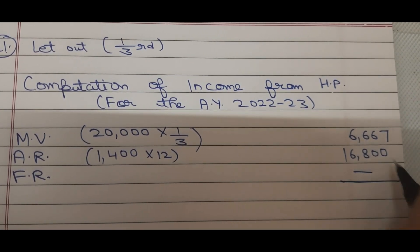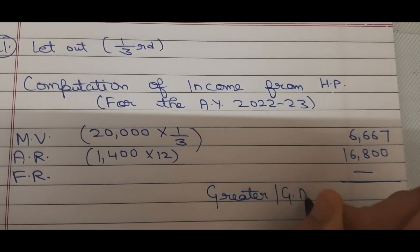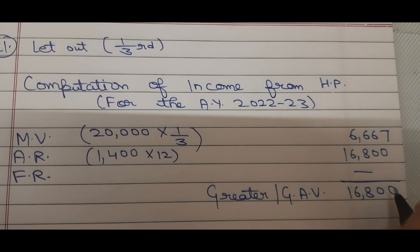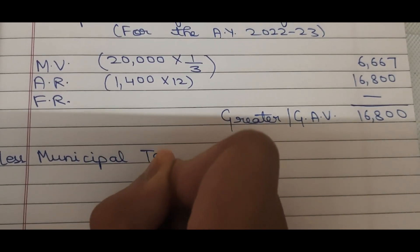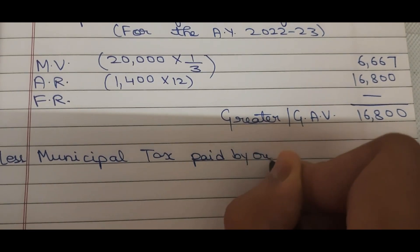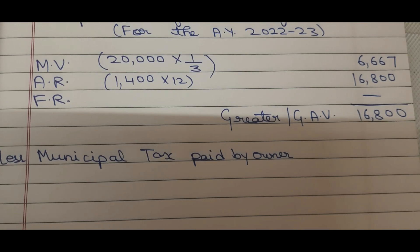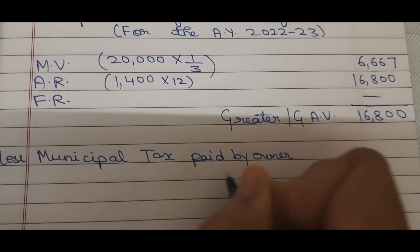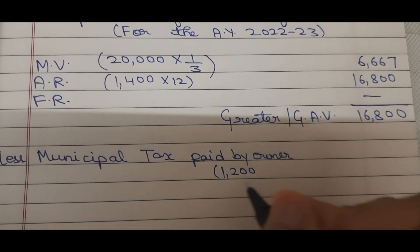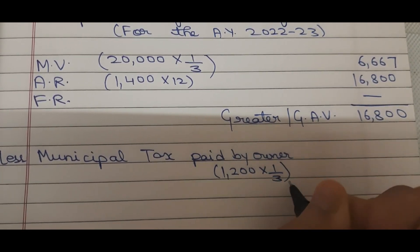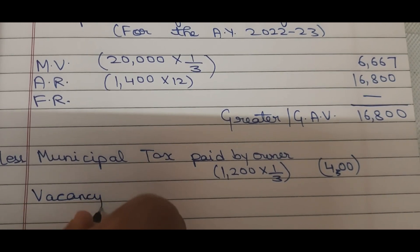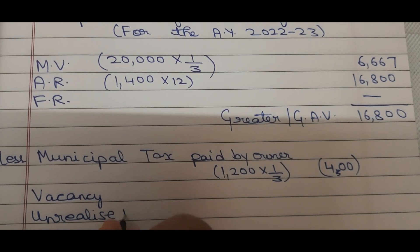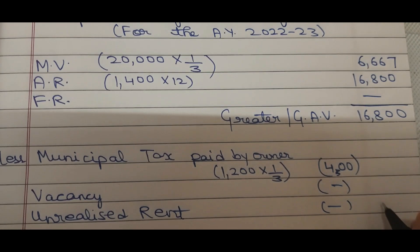Fair rent is not given in the question, so we take the greater of the two values — that is Rs. 16,800 as the Gross Annual Value. From this we deduct municipal taxes paid by owner. Municipal taxes of Rs. 1,200 are for the whole house. Since let-out is one-third, municipal tax for let-out is also one-third of Rs. 1,200 = Rs. 400.